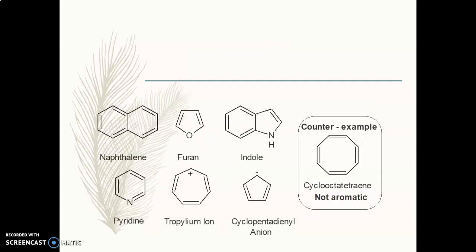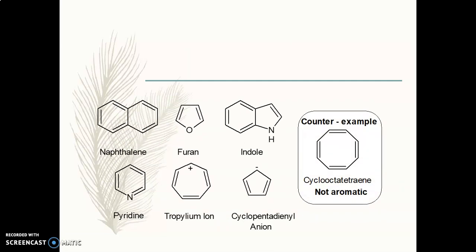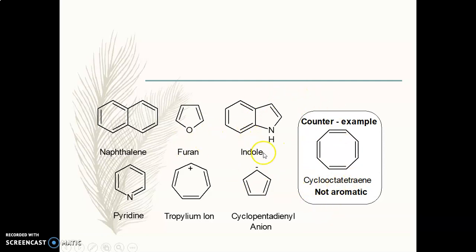Now, looking at this particular chart, we will see what are the different examples of aromatic compounds. Apart from benzene, there are examples like naphthalene, which is also an aromatic compound, then furan, indole, pyridine, tropylium ion — here you can see a positive charge. Here you can see the cyclopentadienyl anion, which has a negative charge. All these are considered as aromatic compounds. But cyclopentadiene is non-aromatic. All these compounds look similar — all have a ring and double bonds with pi electrons — so why is cyclopentadiene considered non-aromatic? There are certain rules to decide whether a compound is aromatic or non-aromatic.